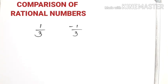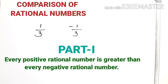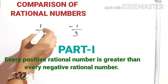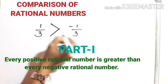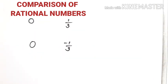Here, 1 by 3 and minus 1 by 3. What about 1 by 3? It is a positive rational number. Listen children: every positive rational number is greater than every negative rational number. So, 1 by 3 is greater than minus 1 by 3 — positive rational number is greater than negative rational number. Is it clear? Now, we have to compare 0, 1 by 3, and 0 minus 1 by 3.